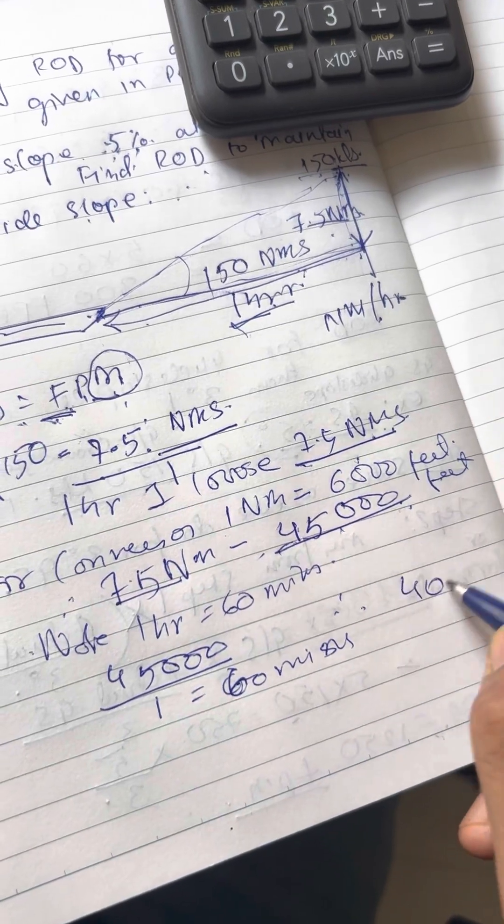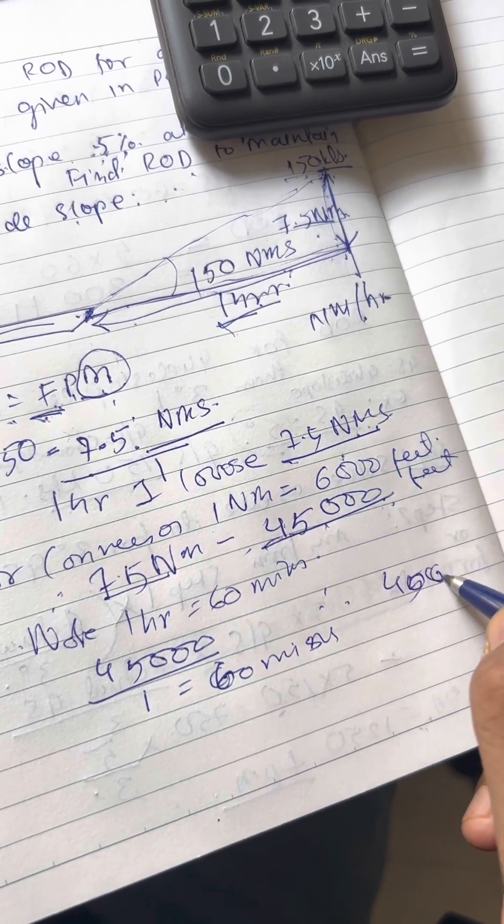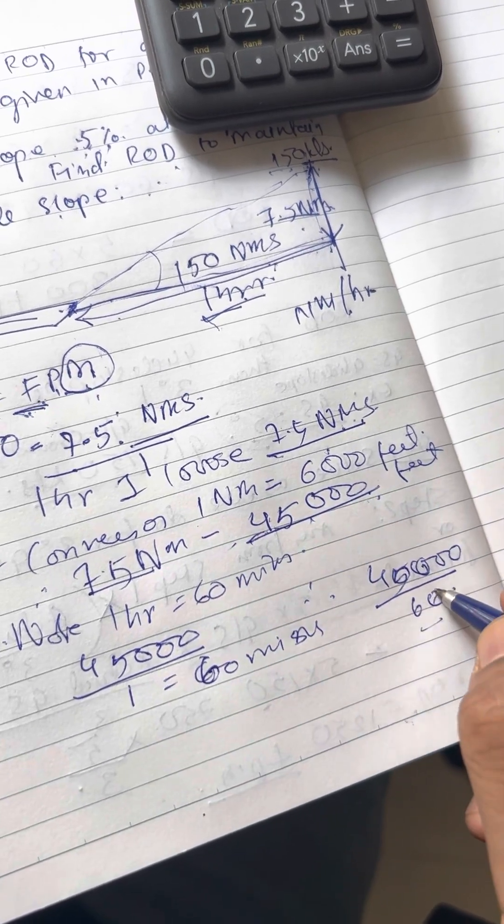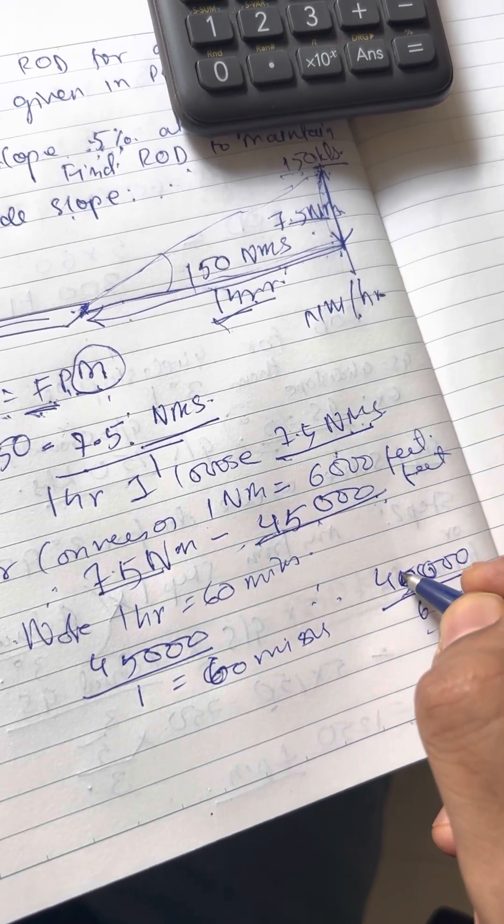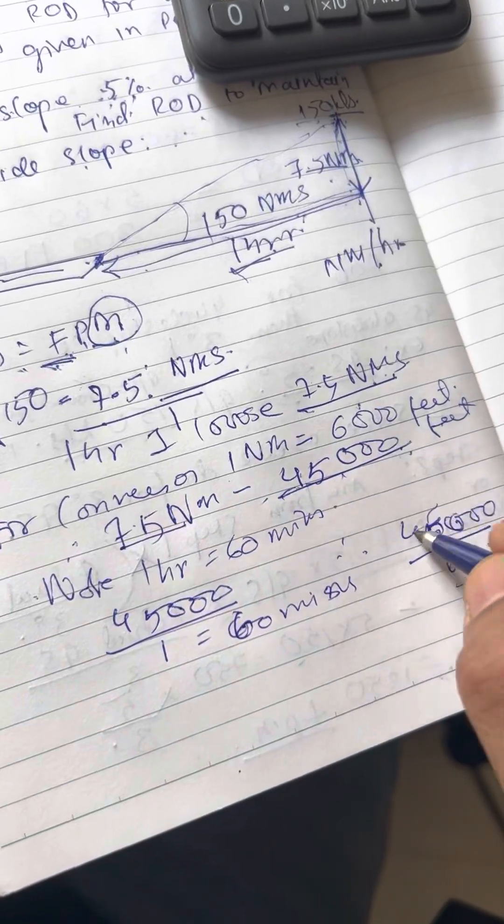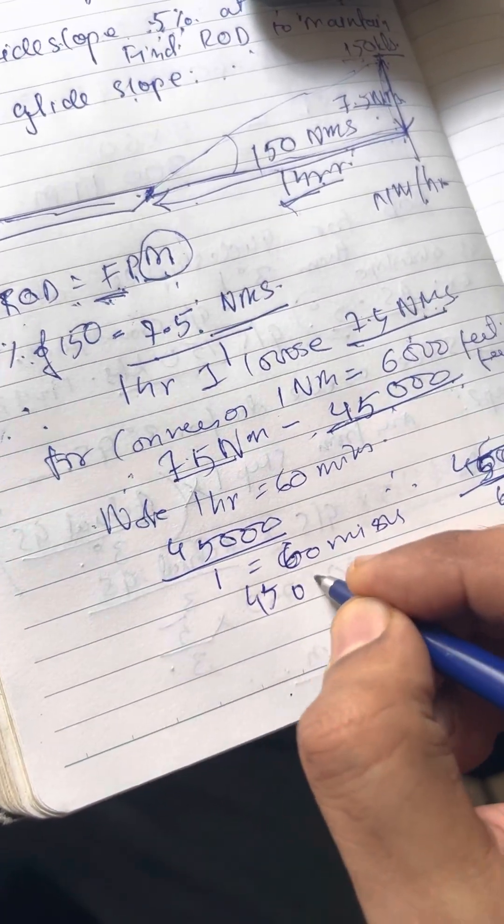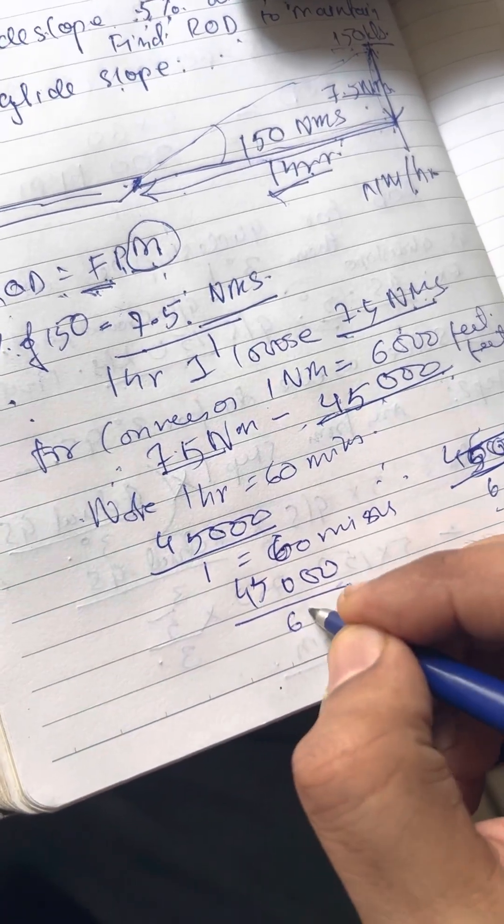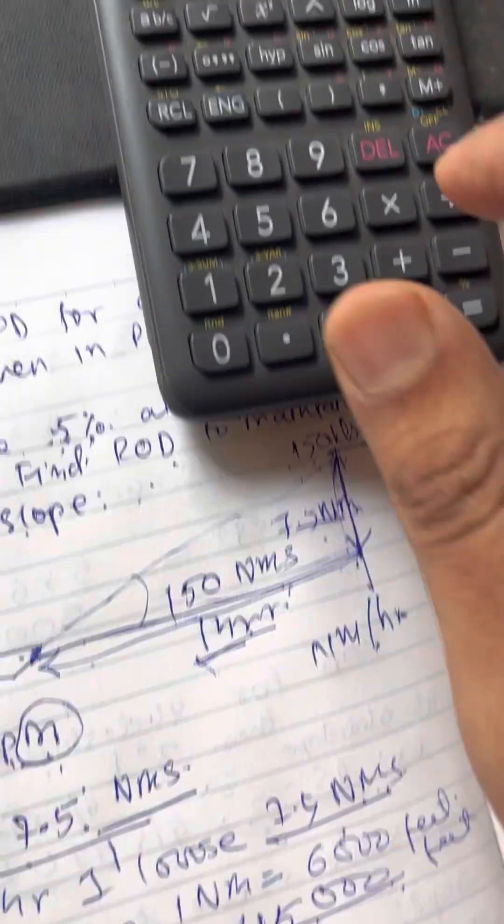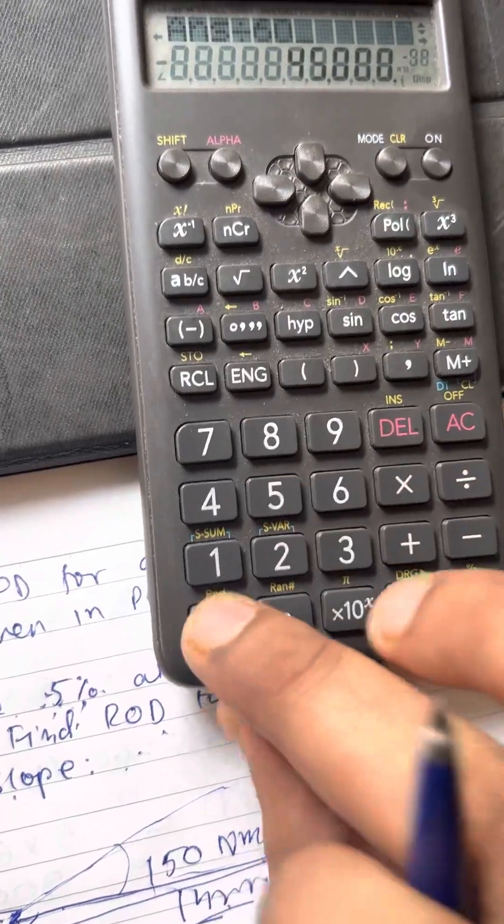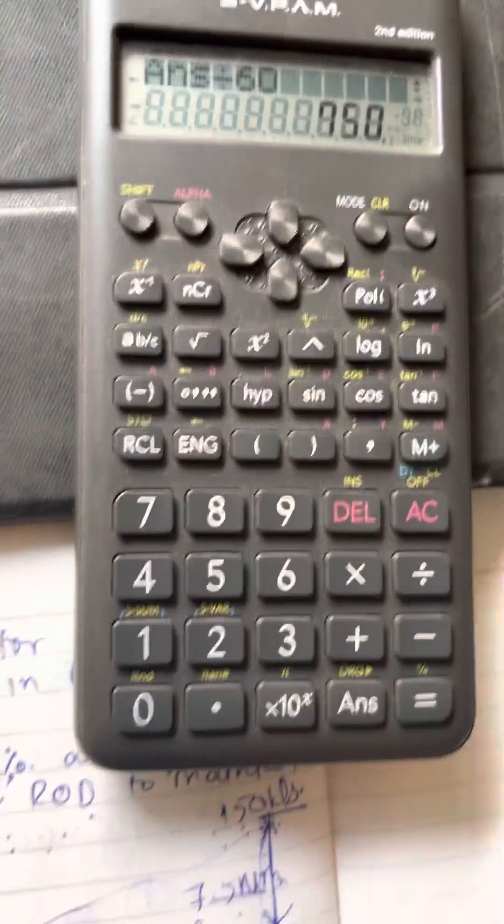Therefore, 45,000 divided by 60 in minutes. 45,000. I'll write it again. I'm not getting hot surface. 45,000 divided by 60. What do I get? 45,000 divided by 60 is equal to 750.